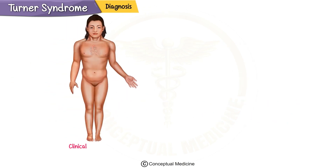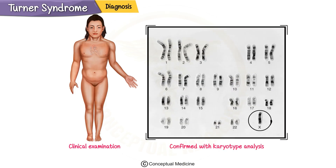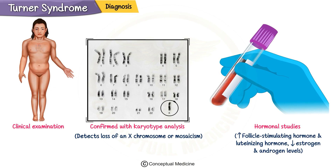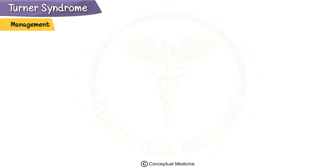Diagnosis of Turner syndrome is usually based on clinical examination and confirmed with karyotype analysis, which detects the loss of an X chromosome or mosaicism in some cases. Hormonal studies typically show elevated levels of follicle-stimulating hormone (FSH) and luteinizing hormone (LH) due to ovarian failure, along with low estrogen and androgen levels.